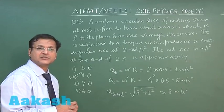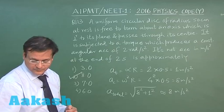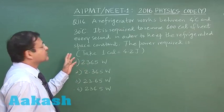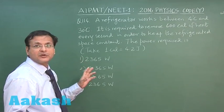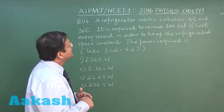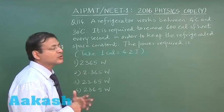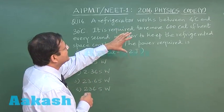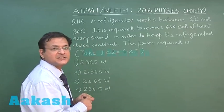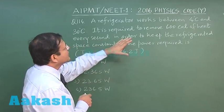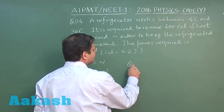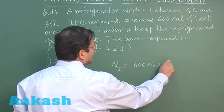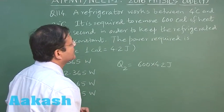Now let us look at next question, that is question 114. In this question 114, which is based on refrigerator, the source and sink temperature has been given, or you can say the cold reservoir and hot reservoir temperature has been given. It has been given that it works between 4 degree Celsius and 30 degree Celsius. It is required to remove 600 calorie. This Q2 has been given as 600 calorie. You can call it 600 into 4.2 joule. And this becomes proportional to the lower temperature. Lower temperature is 273 plus 4.